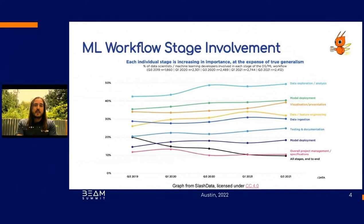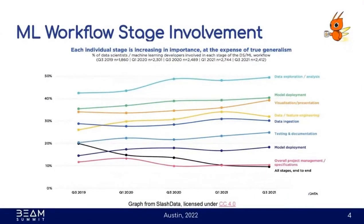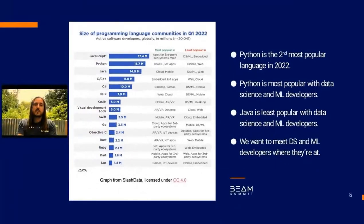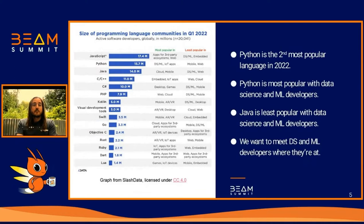Looking at this graph, we can see that Python was the second most popular programming language measured by Slashdata in Q1 of 2022. Notably, Python is most popular for data science and ML, while Java is least popular for data science and ML. Since we want to meet data science and ML developers where they're at, we want to provide them with a data processing framework that integrates seamlessly with all the Pythonic tools they're already using.